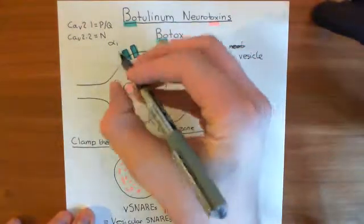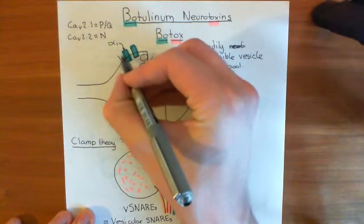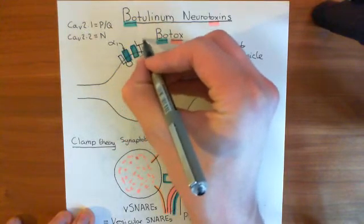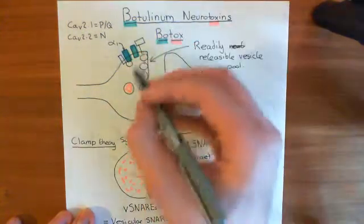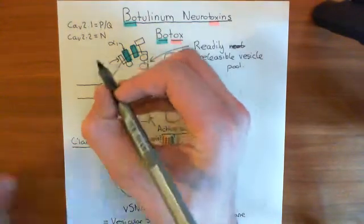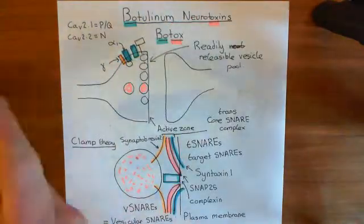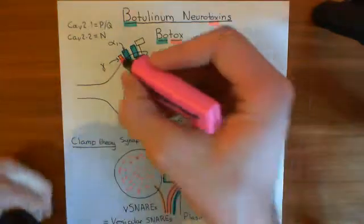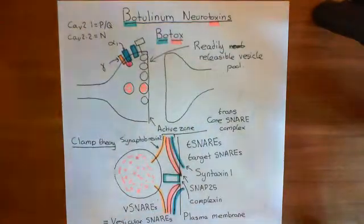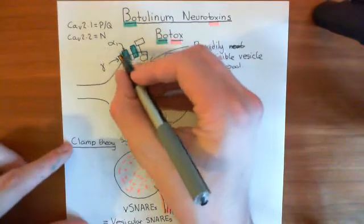Now voltage-gated calcium channels consist of more than just this alpha-1 subunit. They also have a bunch of accessory subunits which I will draw like so. So that's my attempt at a picture of a voltage-gated calcium channel. This accessory subunit here is the gamma subunit. Beta is this subunit here, and it's bound to the link between the first and second domains of the alpha-1 subunit.